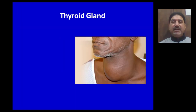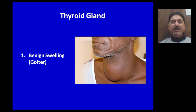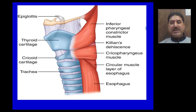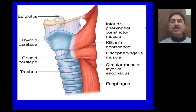Midline swelling in the neck can be from the thyroid gland. It can be a benign swelling, for example a goiter, or it can be a malignant swelling. To understand the movements of a swelling originating from the thyroid gland, let us go to the anatomy of this region.